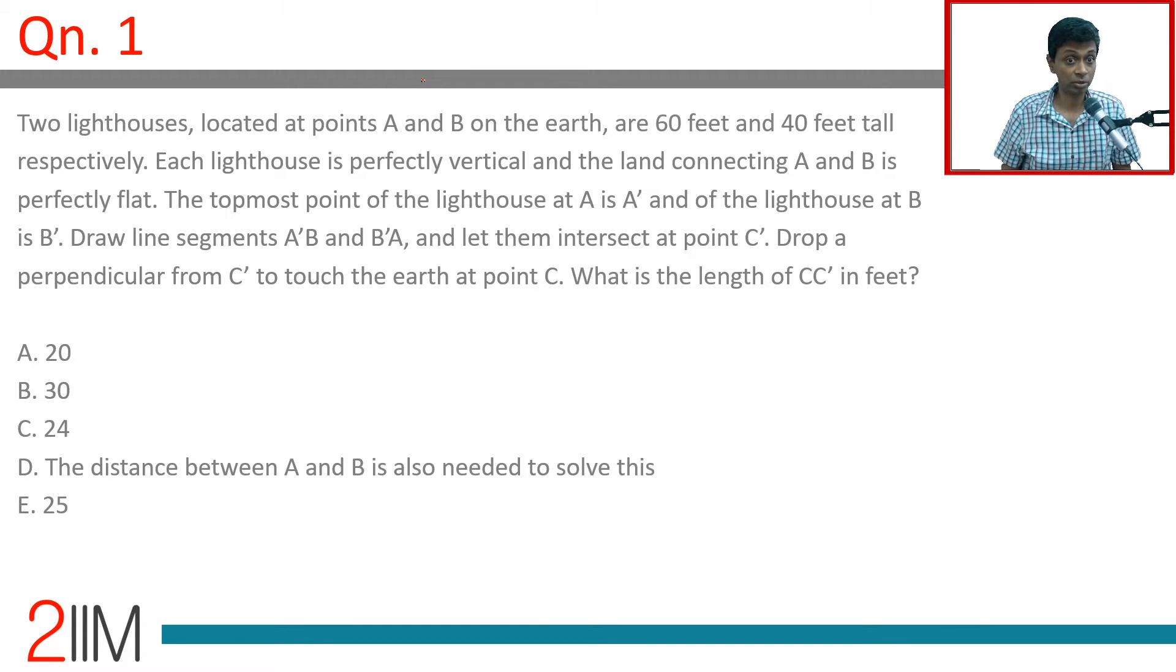X80 has some delightful questions, some brilliant, brilliant questions. So let's look at this one. Two lighthouses located at points A and B on the earth are 60 feet tall and 40 feet tall respectively.